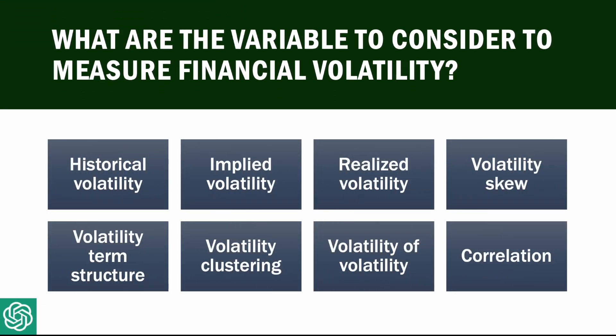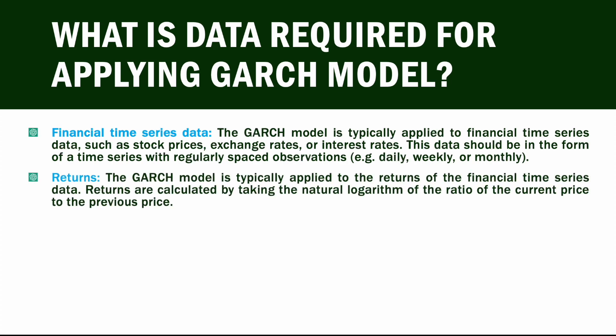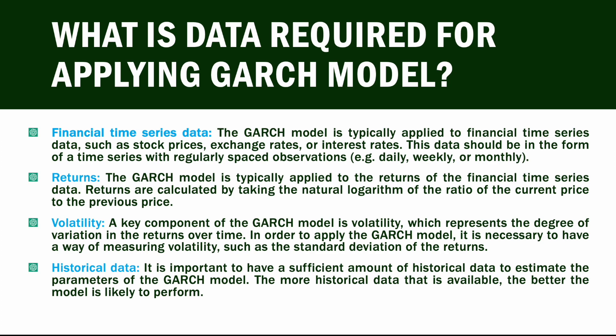I then asked what variables to consider to measure financial volatility, and ChatGPT identified different types of volatility. Moving further, I asked what data is required for applying the GARCH model. It answered that you require financial time series data — daily, weekly, or monthly frequency — using stock market returns, possibly in terms of natural log. You can calculate volatility using standard deviation, and historical data can be used for applying this model.